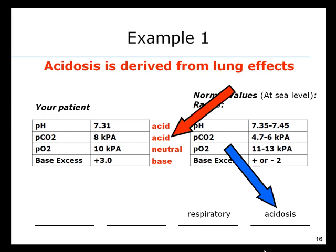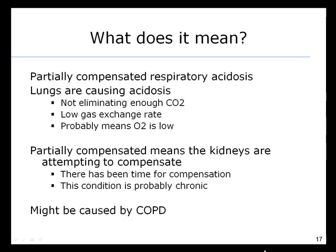The final answer is this patient is partially compensated with respiratory acidosis. This means the lungs are causing acidosis — they're not eliminating enough CO2, which implies a low gas exchange rate and probably low O2 levels. Partially compensated means the kidneys are attempting to compensate, which suggests time has elapsed and the condition is probably chronic. Many different conditions can cause this, but an obvious example might be COPD, chronic obstructive pulmonary disease.